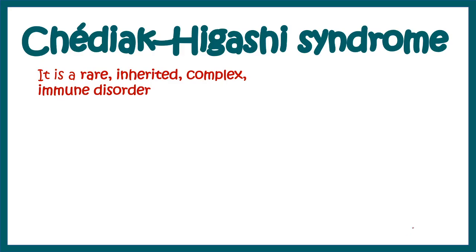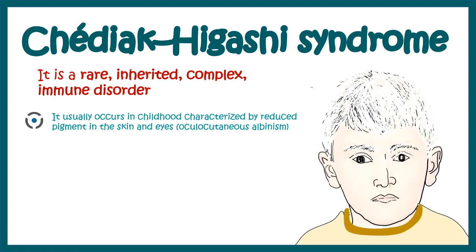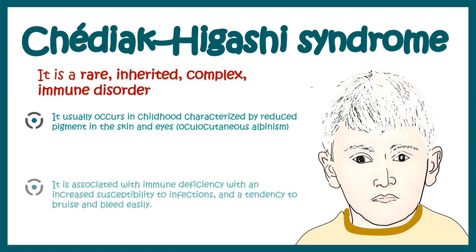In this video we'll talk about Chediak-Higashi syndrome, which is a rare inherited complex immune disorder. It usually occurs in childhood and is characterized by reduced pigment in skin, very comparable to albinism. In affected children you can see oculocutaneous albinism, especially near the eyes, and it is associated with immunodeficiency and increased susceptibility to bacterial infection.